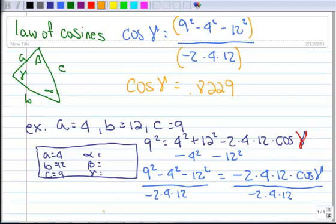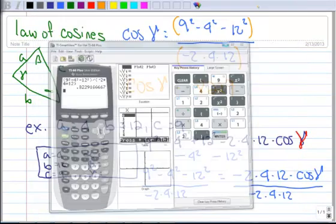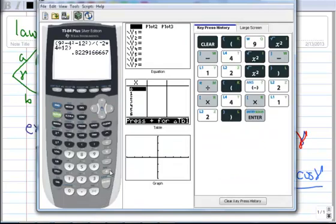So hold right there, hold that in your calculator, because now we're going to do the inverse. Actually, let's sketch it on paper first, so gamma is going to be equal to inverse cosine of 0.8229. All right, so keeping all those decimals, see all those decimals right there, this is what you're going to do. You're going to go second, cosine, so there's your inverse.